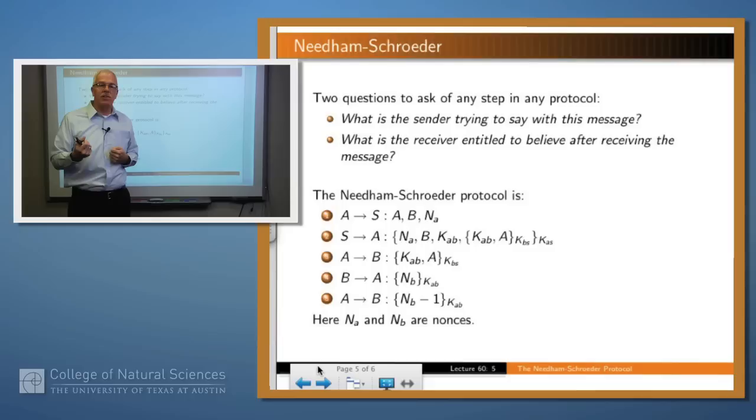So at the end of step three, A has the key and B has the key, but A doesn't know that B has the key. Why not? Because message three might have been lost. And so then there's these two additional steps, and the idea of the two additional steps is for each of them to learn that the other has the key and can use it.